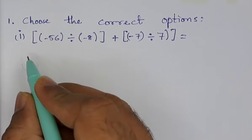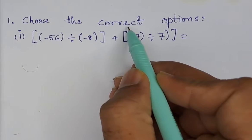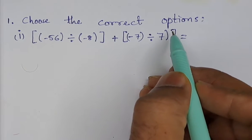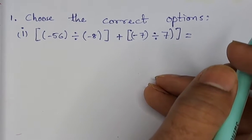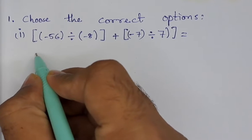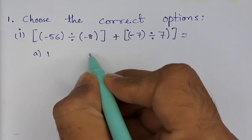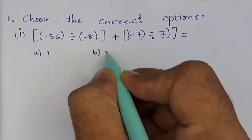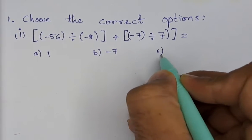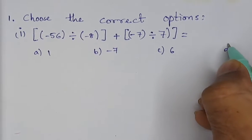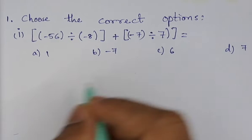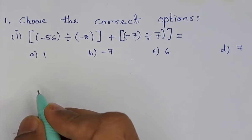Let us solve the first problem. Choose the correct option. The problem is shown here and the options are: a) 1, b) -7, c) 6, and d) 7. Now let us start the solution.